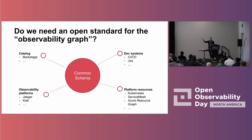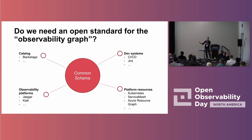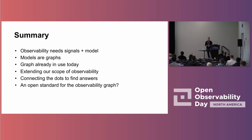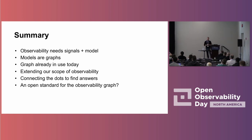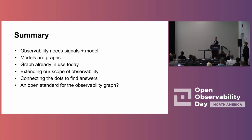Taking our service catalogs in Backstage with the data from our observability platforms, with our dev systems like CICD pipelines and JIRA, and platform resources like Azure Resource Graph and AWS — how can we stitch this all together? Potentially, at a future Open Observability Day, we can be talking about an open standard for something we might call the observability graph, that allows us to really start to make sense of all this data we're collecting. To recap: observability needs signal and model; models are graph; graph is already in use today across a number of tools; but we should be thinking about extending the scope of what we think about as observability, connecting the dots to find those answers — and do we need an open standard for the observability graph?